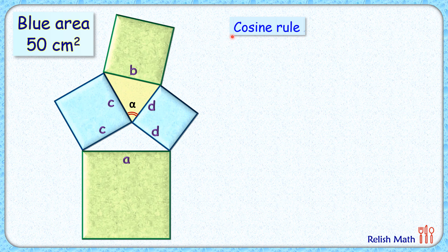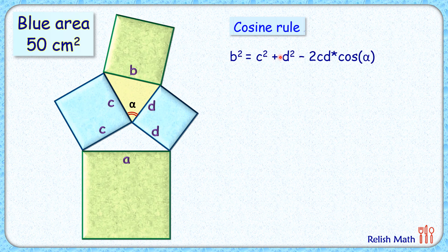It states that b squared, that's the side opposite to the angle, so b squared is c squared plus d squared minus two times cd cos alpha, where alpha is this given angle.